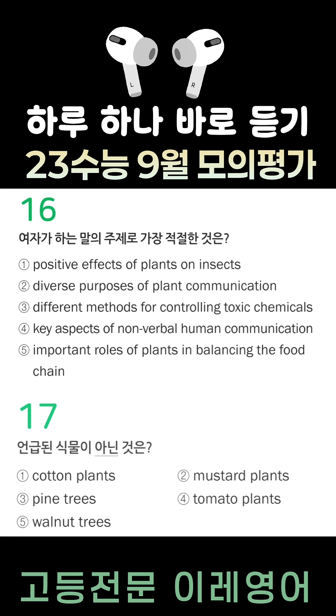First, plants communicate to call for help. When cotton plants are attacked by bugs, these plants send out a chemical signal to attract the bug's natural enemy that eats them.